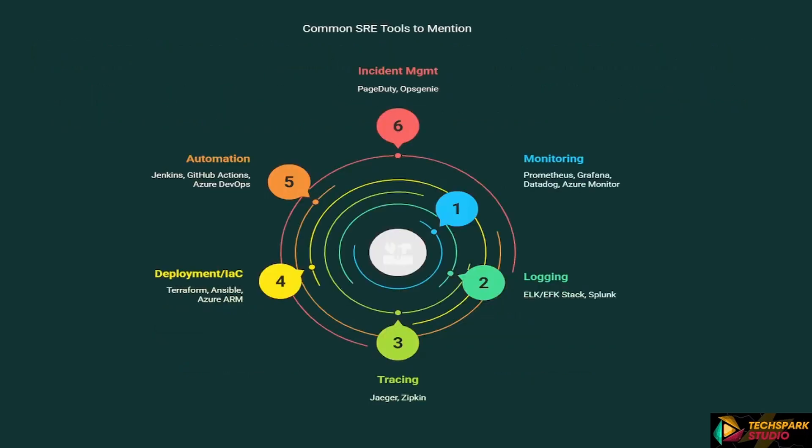Last but not the least, let's go through a list of common SRE tools used in various areas. For monitoring: Prometheus, Grafana, Datadog, Azure Monitor. For logging: ELK/EFK stack, Splunk. For tracing: Jaeger, Zipkin. For deployment IaC: Terraform, Ansible, Azure ARM. For automation: Jenkins, GitHub Actions, Azure DevOps. For incident management: PagerDuty, OpsGenie.